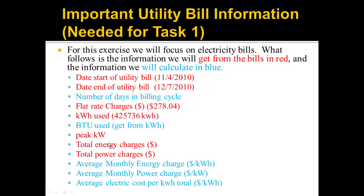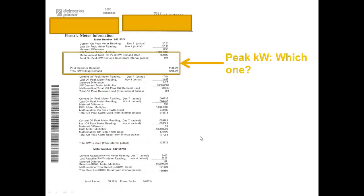Now let's look for the peak kilowatts — this is probably the hardest thing to find on the bill. If we look at page 2 of our bill, which looks very overly complicated, we have a bunch of different metrics and ways to measure our utility bill usage. We have all of our meter readings up top, and then we have the on-peak mathematical total of on-peak kilowatt demand used, which is 900. And then from interval pulses — every 15 minutes — the utility sends out an interval pulse of how much we're using. That's 894.